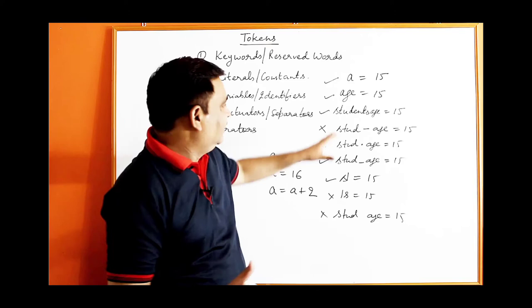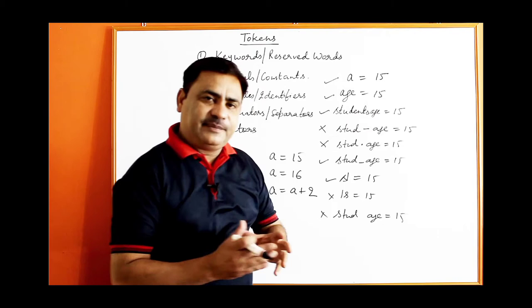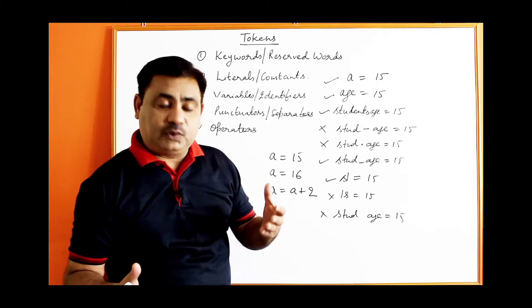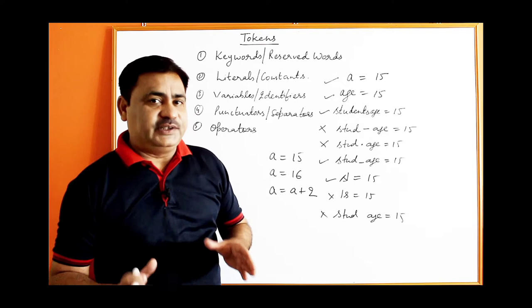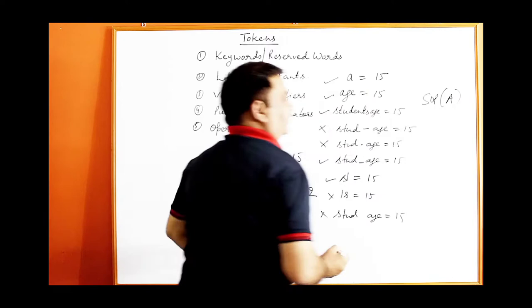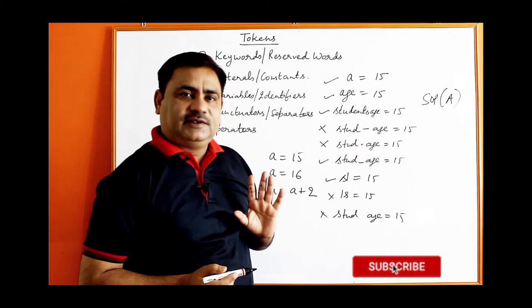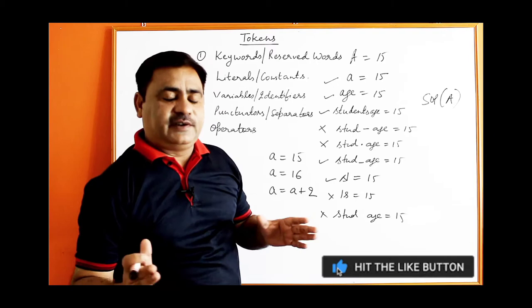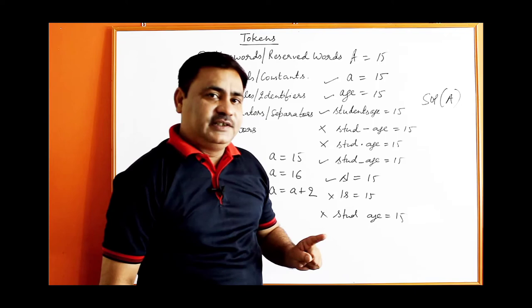Second rule: the first character must never be a digit; you can use a digit as the last character or in between the name but not as the first character. Third rule: a variable can be of any length — but always use small and meaningful names so the meaning is clear. Fourth rule: Java is a case-sensitive language, meaning uppercase and lowercase letters are treated differently — small a and capital A are two different variables.